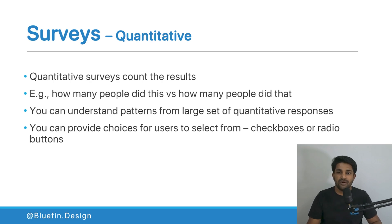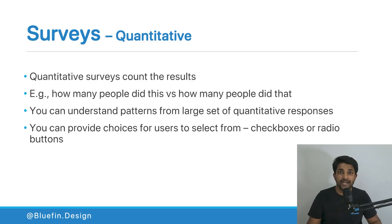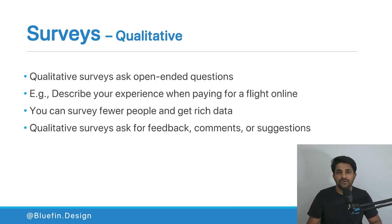In terms of question formats, you can provide choices like checkboxes or radio buttons. Newer tools also allow a range scale — for example, 'how do you feel about this product?' — which is also a quantitative question type.